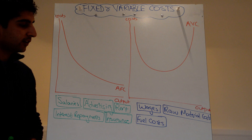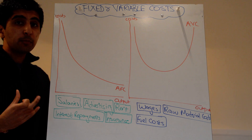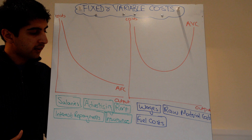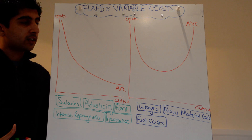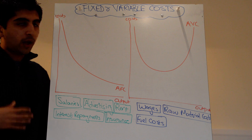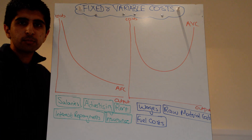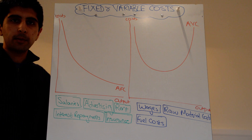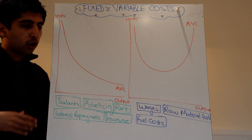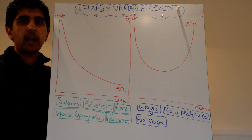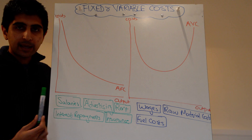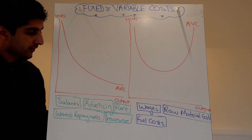Let's first look at fixed costs. It's very important to understand the definition. Fixed costs are costs that do not vary with output. So as you increase or decrease production, your fixed costs stay exactly the same — costs you have to pay regardless of how much you produce. If you look at examples of fixed costs, it will make logical sense.